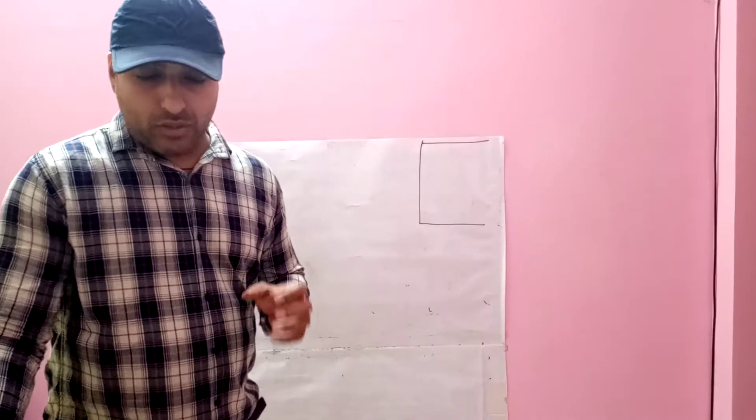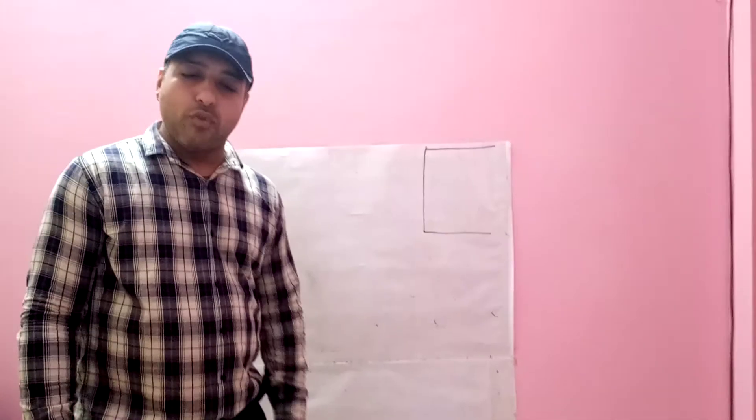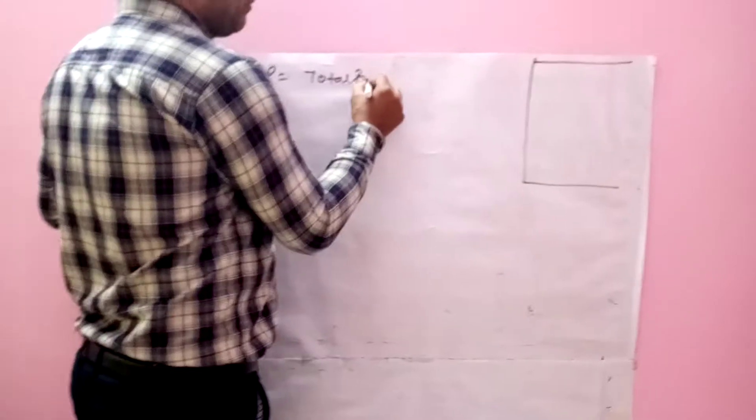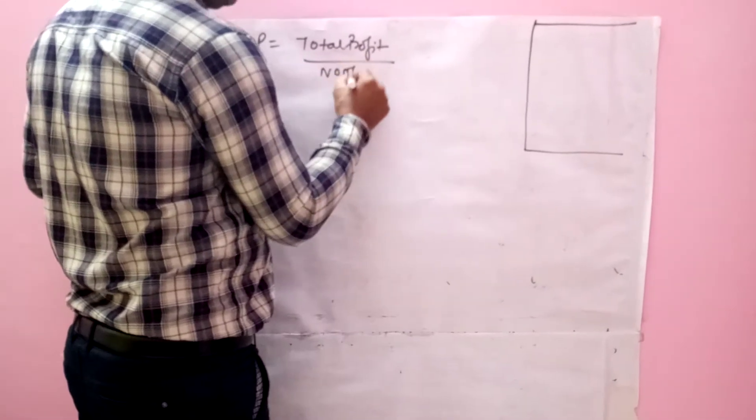First of all, I will calculate average profit, then calculate goodwill, then super profit, and then the capitalization of super profit method. For the first point — four years purchase of average profit — the formula for average profit (ABP) is: total profit divided by number of years.